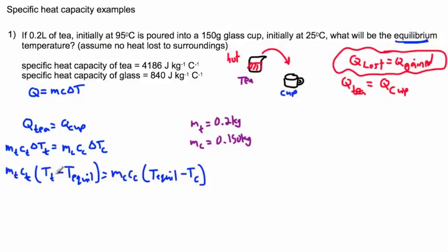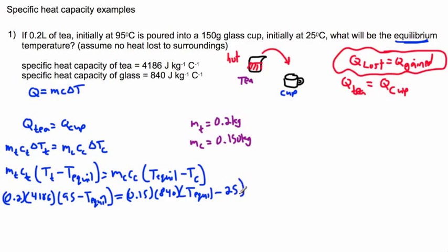I just need to fill in all the details that I know. The mass of the T is 0.2, the specific heat capacity of the T is 4186, then I have 95 minus T equilibrium. That equals the mass of the cup, 0.15, times the specific heat capacity of the cup, 840, times T equilibrium minus 25.